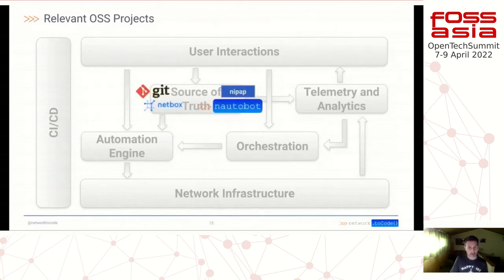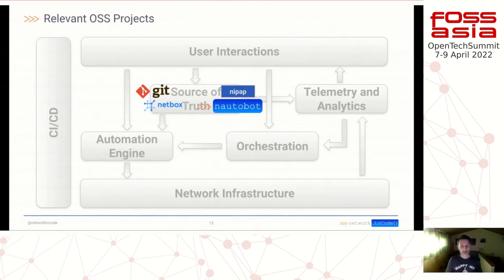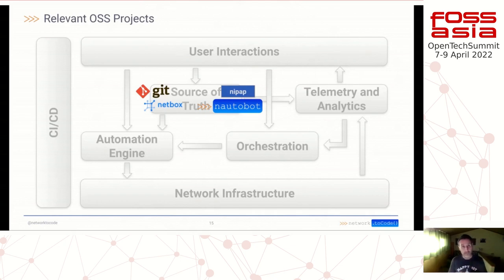First, an important piece: the source of truth, where we define this data. The data has different characteristics — depending on whether it needs to change very frequently or by a user, it can be stored in different places, like in Git or relational databases. Here we have two common examples of source-of-truth tools that are comprehensive for data center infrastructure management and IPAM management: Netbox and Nautobot. There are multiple available solutions for source of truth that tackle different parts of the data information we need to store.